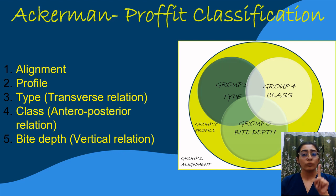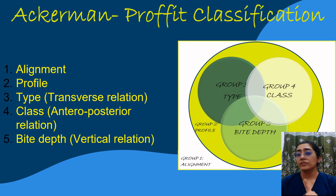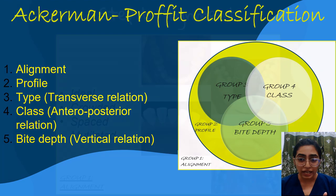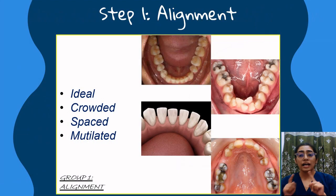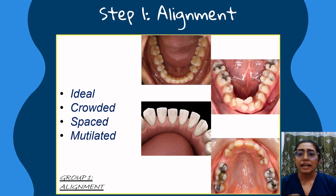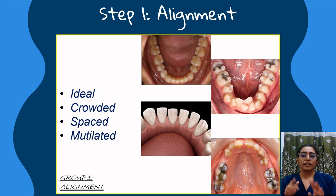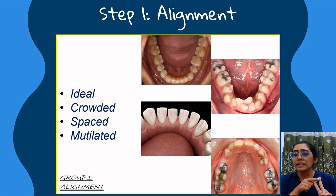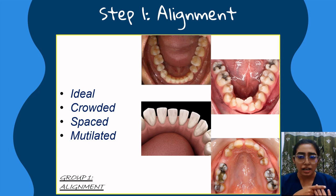Step one includes the description of the alignment of the arch. The alignment is described and viewed in the form of a square outside the Venn diagram, and any arch can be classified into an ideal form, crowded, spaced, or a mutilated arch form.